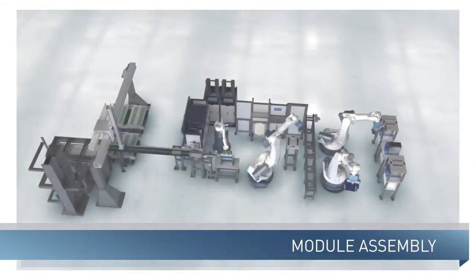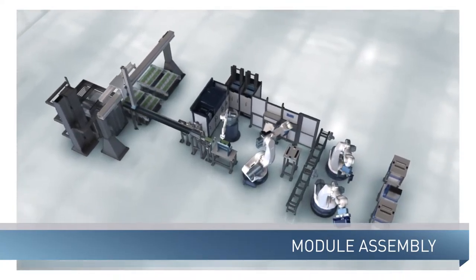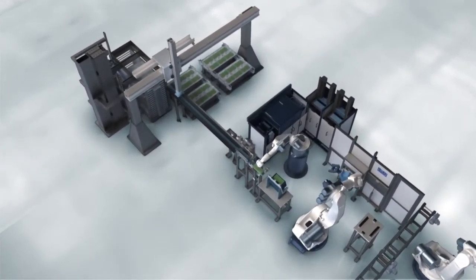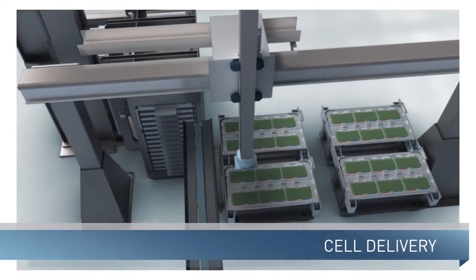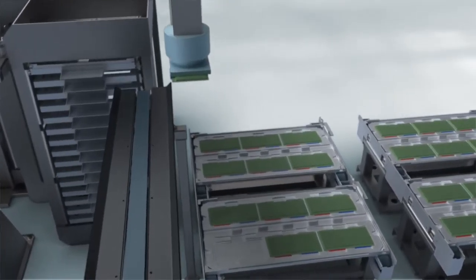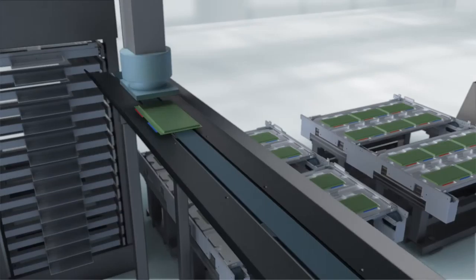In the module assembly section, we mount individual battery cells into one module. Up to 40 individual cells form a series circuit in order to achieve the necessary voltage level.